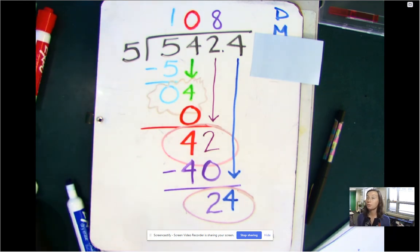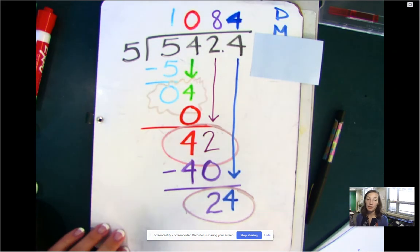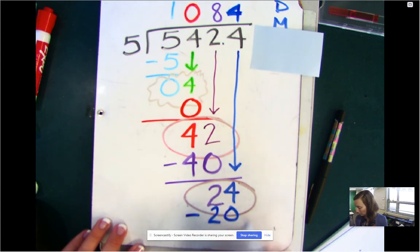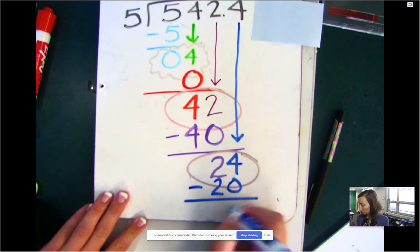How many times does five fit into 24? Well, five times four is 20. Five times five is 25. That's too big. So five fits into 24 four times. Multiply. Four times five is 20.